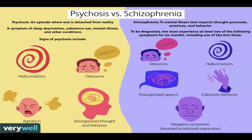The term psychosis denotes a variety of mental disorders, including the presence of delusions, various types of hallucinations — usually auditory or visual, but sometimes tactile. Schizophrenia is a particular kind of psychosis characterized mainly by a clear sensorium but with a thinking disturbance.